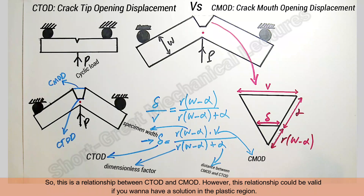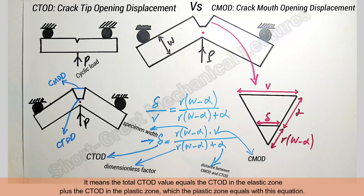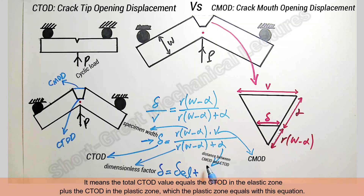This is the relationship between CT-OD and CM-OD. However, this relationship is valid if you want a solution in the plastic region. It means the total CT-OD value equals the CT-OD in the plastic zone, which is given by this equation.